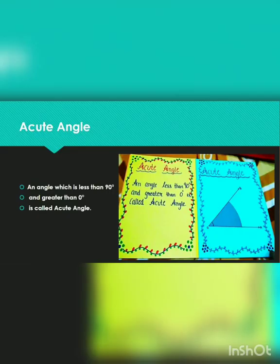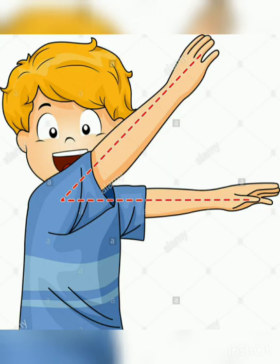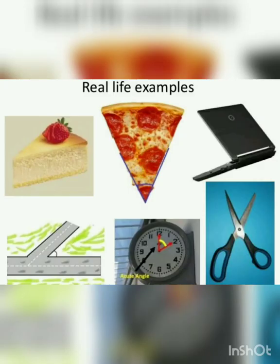The next one is acute angle. An angle less than 90 degrees and greater than zero degrees is called an acute angle. You can make an acute angle with your arms, like this boy in the picture. Here are a few examples of acute angle: a cake piece, a pizza piece, a slightly open laptop, scissors, your watch, and a crossroad.